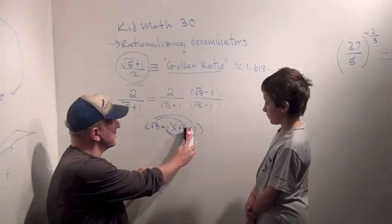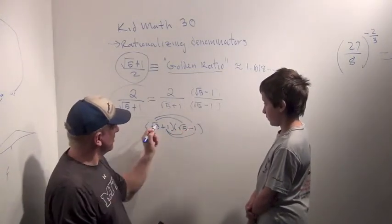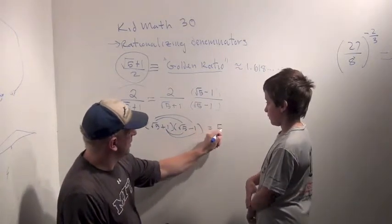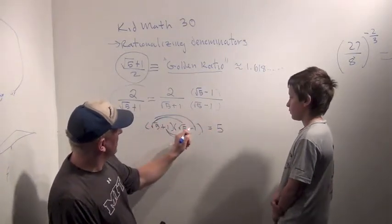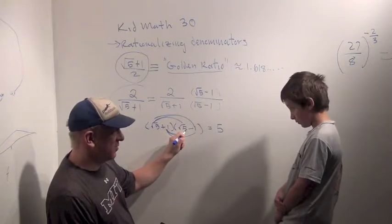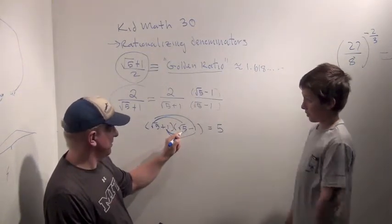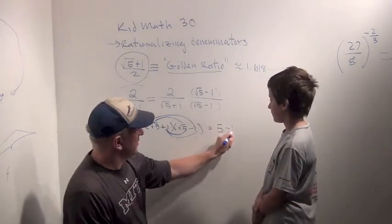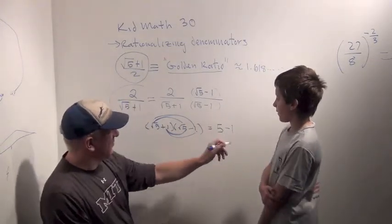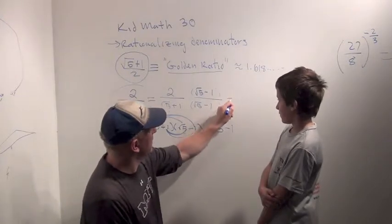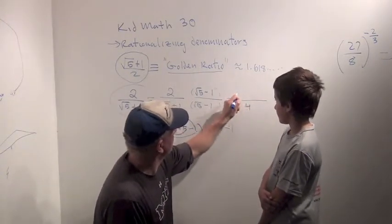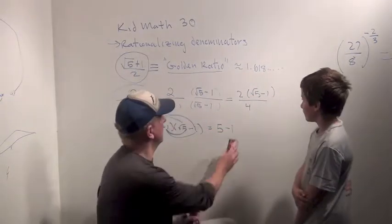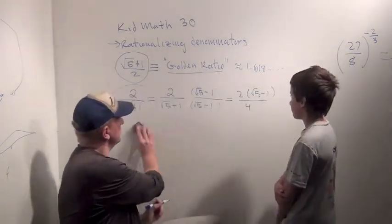Now, it does get rid of the square roots because square root of 5 times square root of 5, which is 5. Square root of 5 times minus 1, square root of 5 times plus 1. What does that add up to? That just cancels each other out. Right, and then we have 1 times minus 1, which is minus 1. And 5 minus 1 is 4. So we're left with 4 on the bottom, and we're left with 2 times the square root of 5 minus 1 on the top.